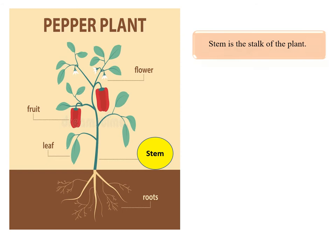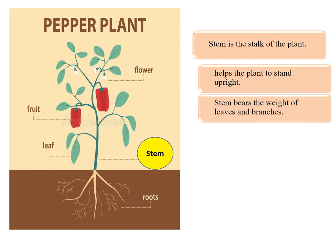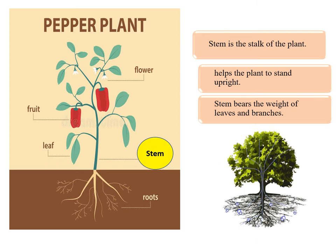At first, let's discuss about the stem. The stem is the stalk of the plant. It helps the plant to stand upright. The stem bears the weight of leaves and branches. The stem carries water and minerals from the roots to the leaves, and carries food prepared by the leaves to different parts of the plant.